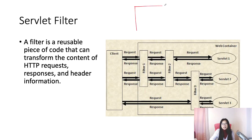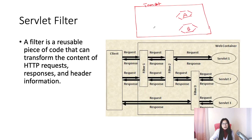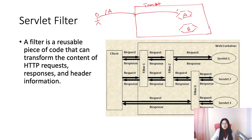Here, inside our web container — this is our Tomcat — Tomcat will have a servlet A, servlet B, and can have many servlets and JSPs. This is our client, which is a browser. Previously, when the client makes a request to a servlet, Tomcat — after receiving the request — would directly forward the request to servlet A. Then when servlet A has a response, it sends it back to the client. This is the request, and here we have a response. This was the previous scenario.